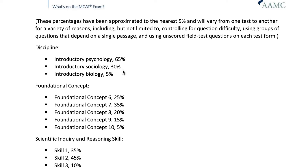Another thing to mention is that the concepts in sociology versus biochemistry are very different. Most people their freshman year of college need no build-up in terms of classes to take sociology because it's an introductory class, whereas biochemistry usually requires introductory biology as well as a significant organic chemistry background.